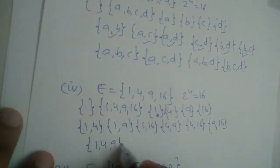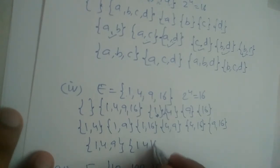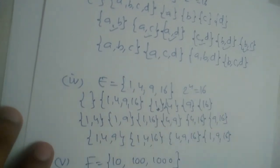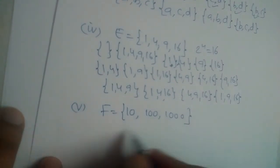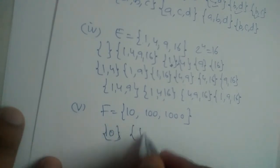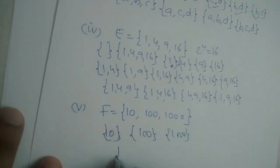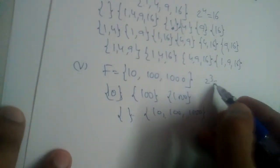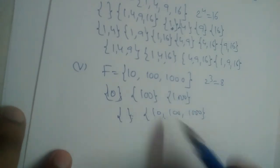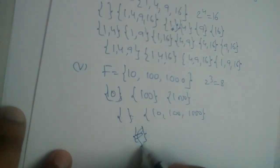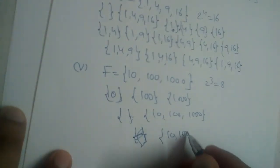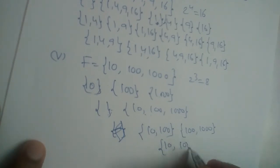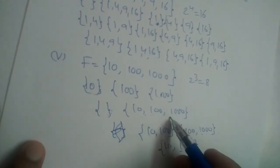Three-element subsets of E: {1, 4, 9}, {1, 4, 16}, {4, 9, 16}, and {1, 9, 16} — total 16 subsets. Finally, for F = {10, 100, 1000}, n is 3 so we have 2 cubed equals 8 subsets. Those are: the empty set, {10}, {100}, {1000}, {10, 100}, {10, 1000}, {100, 1000}, and {10, 100, 1000} — total 8 subsets.